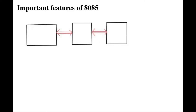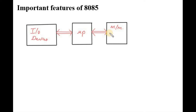The 8085 microprocessor has some very important features related to computer architecture. Suppose this is our I/O devices, and this is our microprocessor. And this is our memory. Memory contains data and programs.